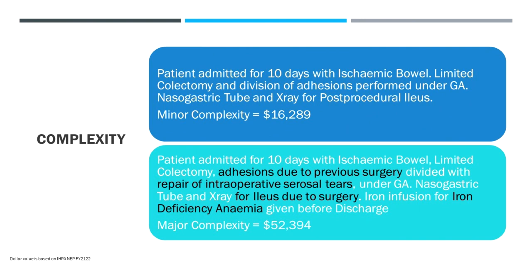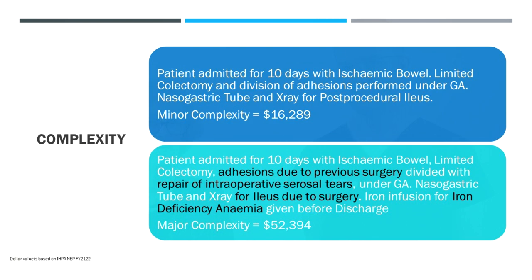Repair of an intraoperative serosal tears, so better operative documentation. Absolutely. And then we've got nasogastric tube and x-ray for an ileus due to surgery, being the addition again of just a few extra words. And lastly an iron infusion for iron deficiency anemia. We are giving a lot of iron and a lot of blood to the patient. It's a great thing, iron infusions, fantastic, love it. Let's document why we've given them though, and making it due to iron deficiency is really important. So this might have been the same management but because we wrote it specifically that's a difference between $16,000 and $52,000.